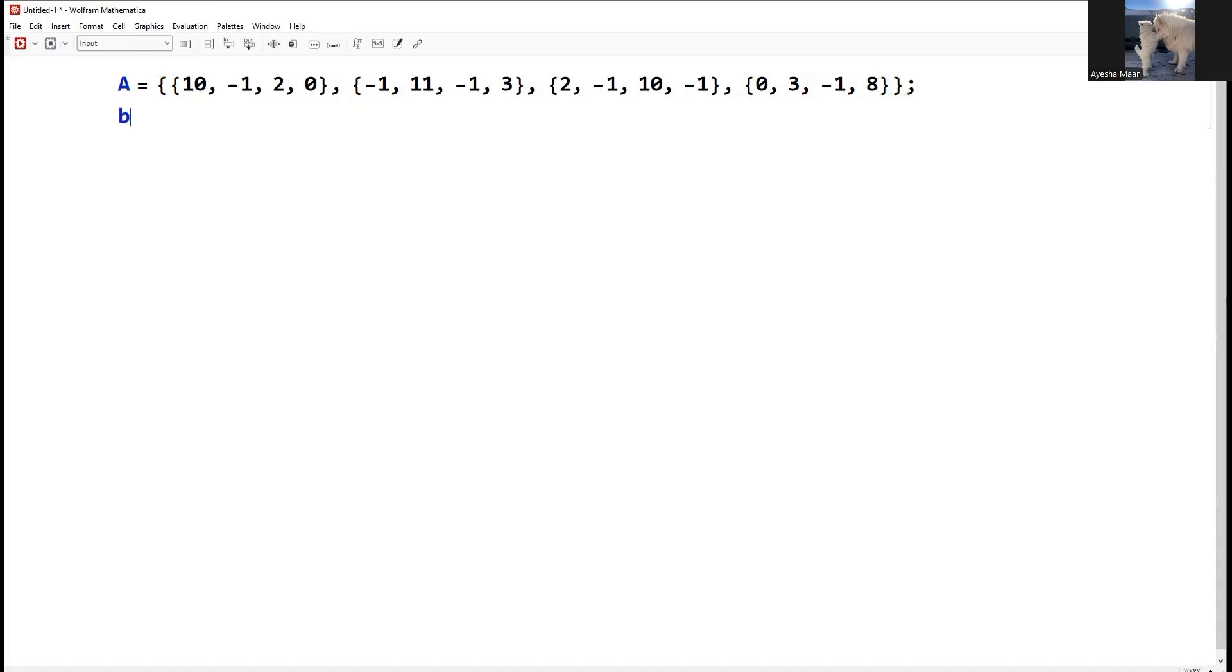This is our A matrix. Now we have to define B matrix, the same as we took last time. This is our B matrix. Now we have D1, the diagonal matrix. We need to do the formulation. D1 is equal to diagonal matrix of diagonal A.